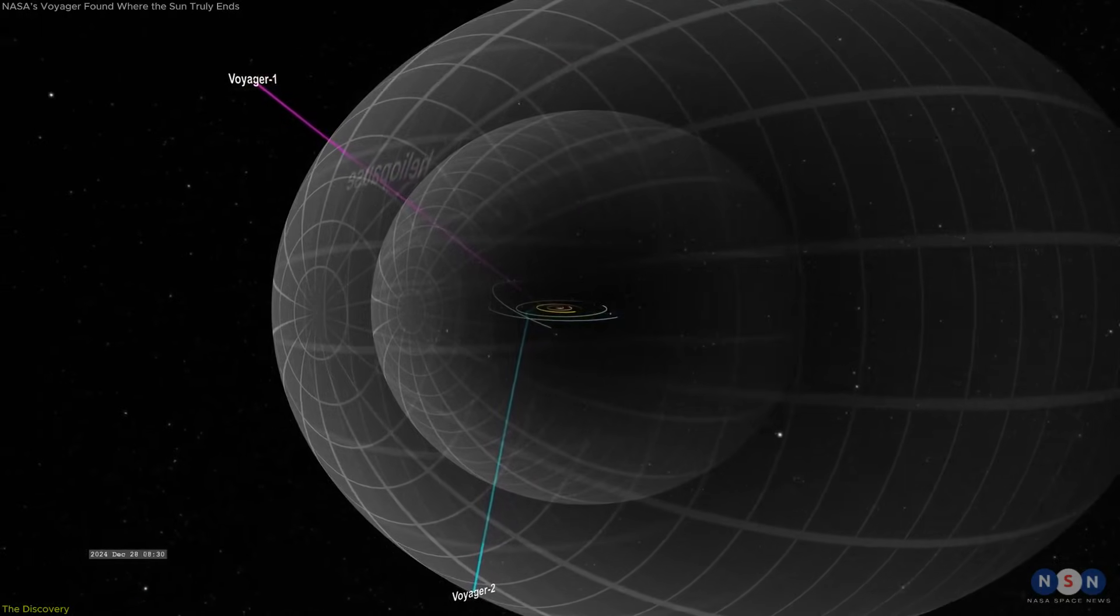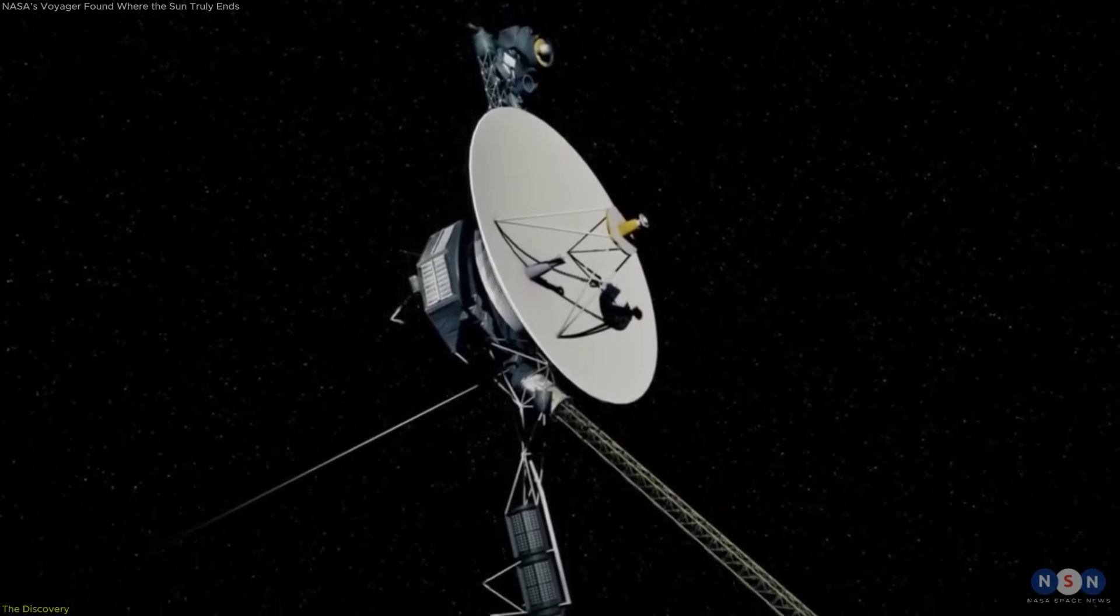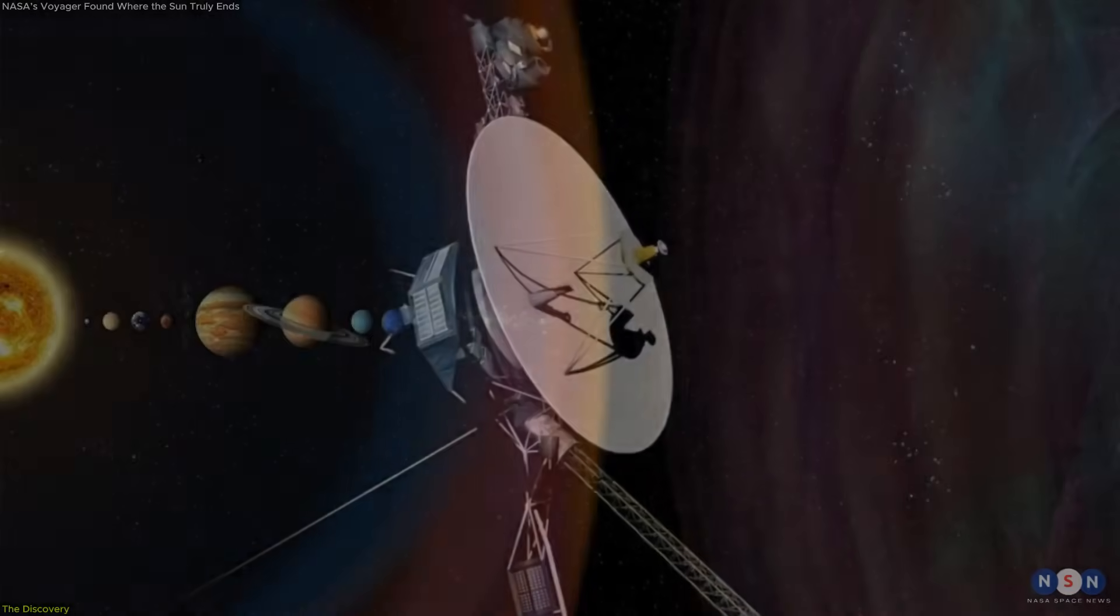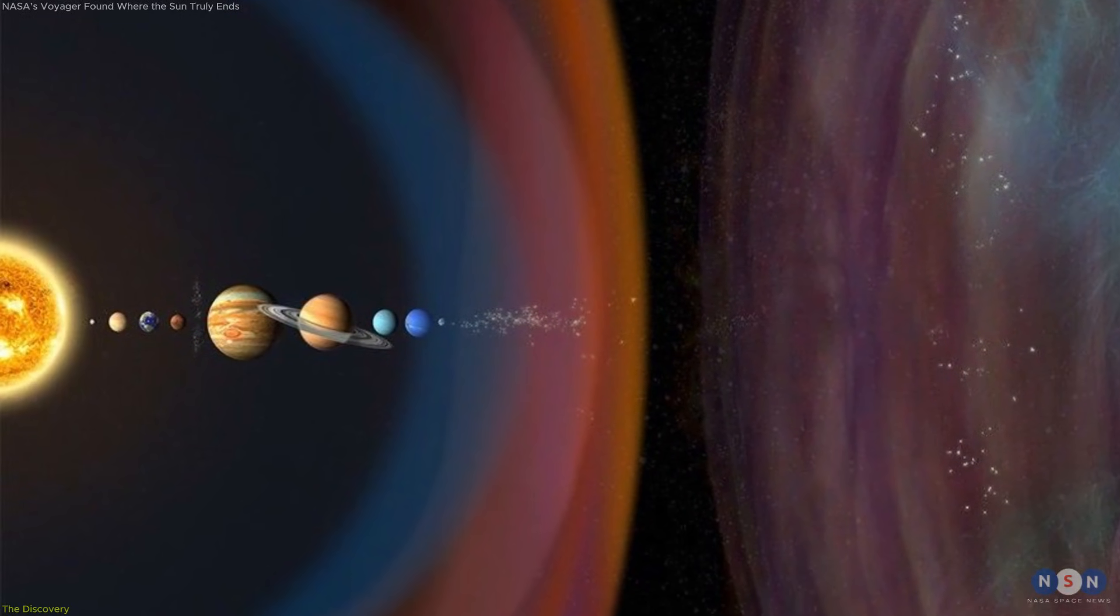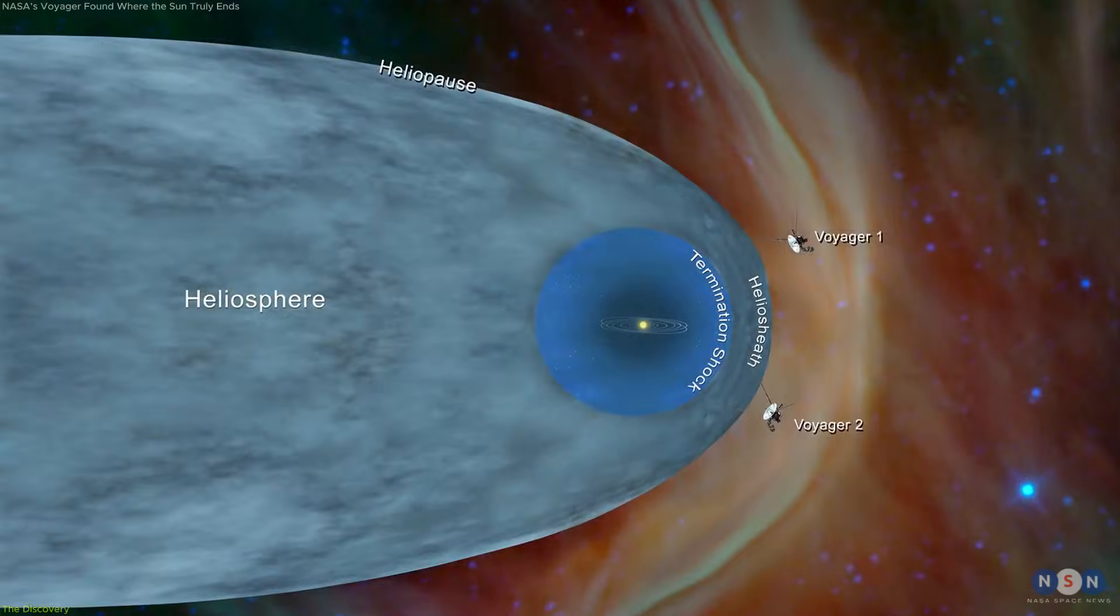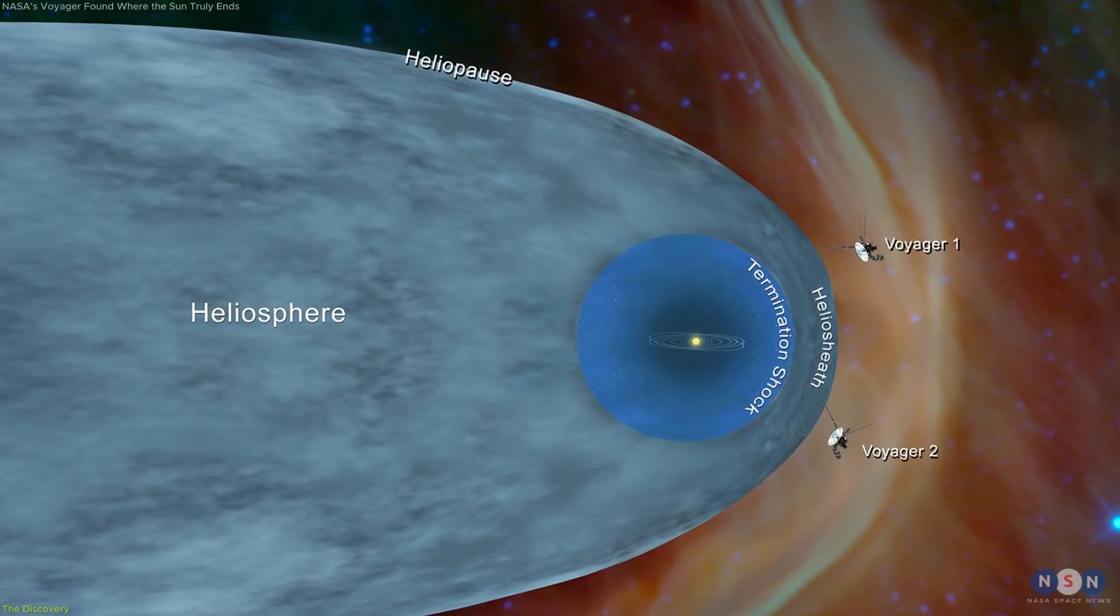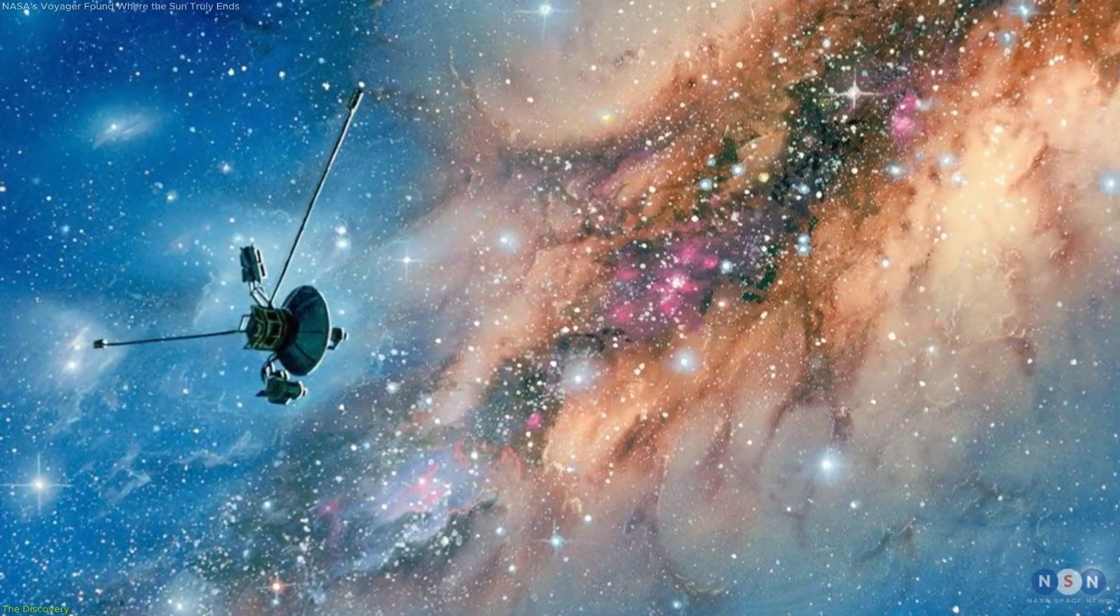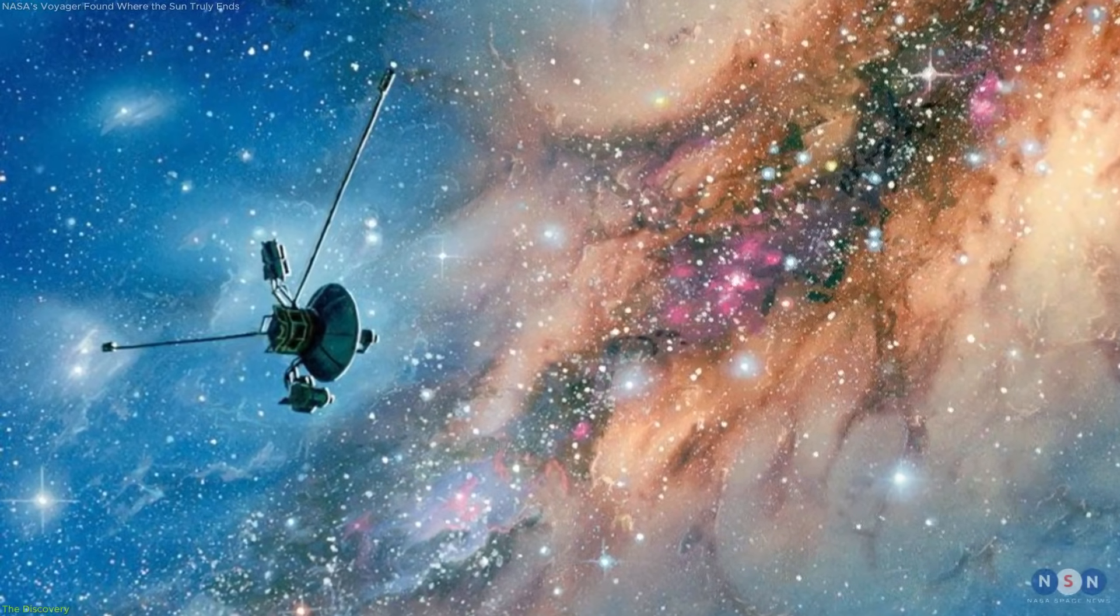When Voyager 1 crossed this boundary in 2012, its instruments recorded a sudden drop in particles coming from the Sun, and a sharp increase in high-energy cosmic rays arriving from outside the solar system. These changes confirmed that the spacecraft had moved into interstellar space. Voyager 2 later observed the same transition from a different direction, providing a second, independent set of measurements.